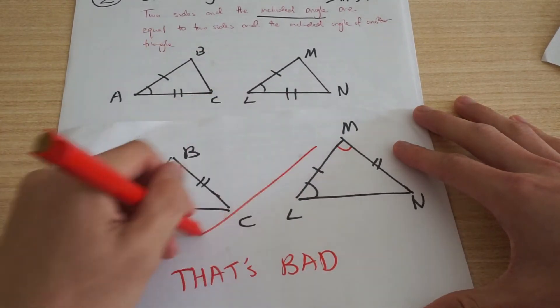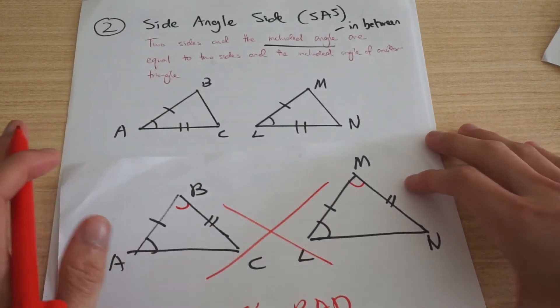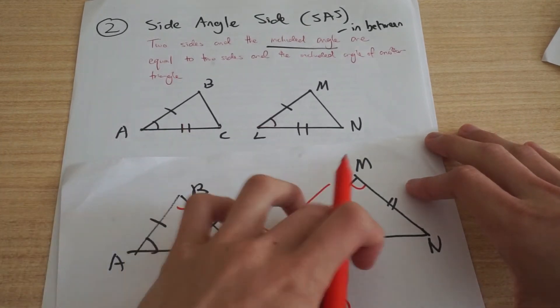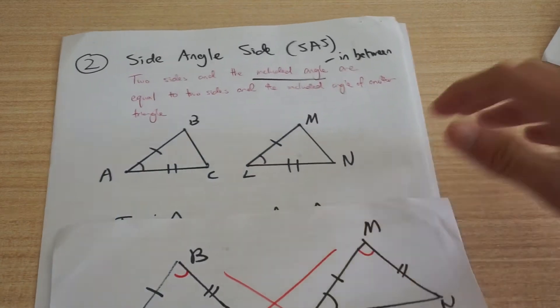That's what you really want and so this is bad. You can't use side angle side for these two triangles here and there's a reason for that but I'll save that for another time.